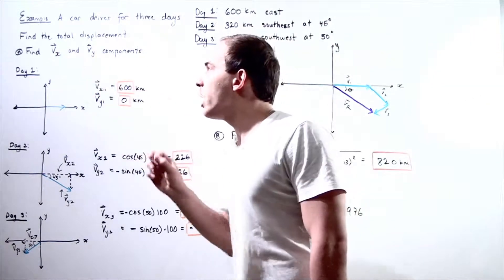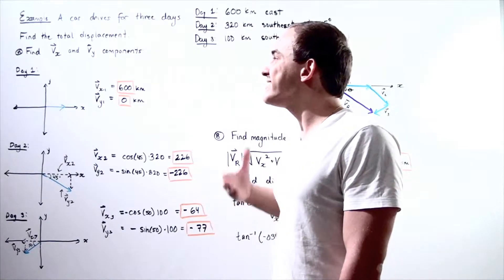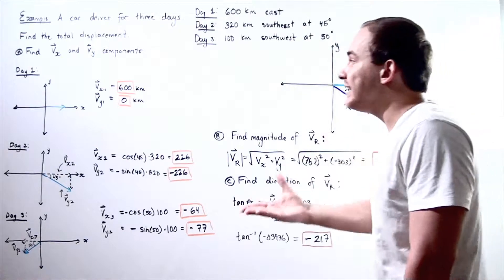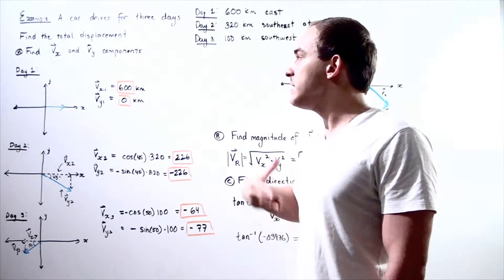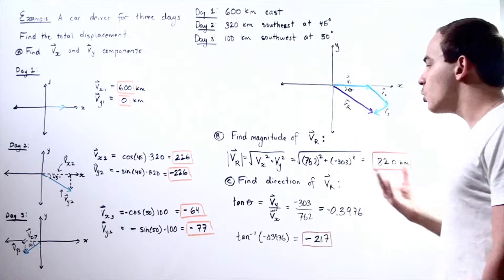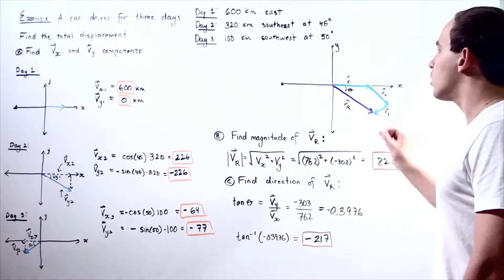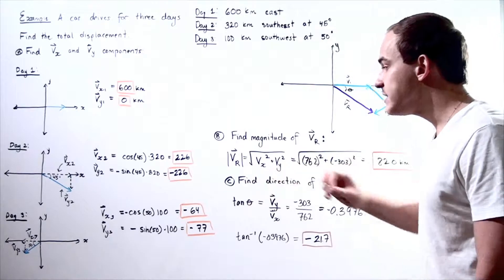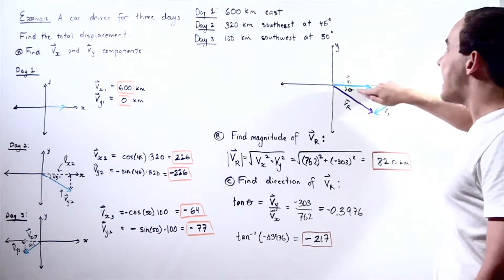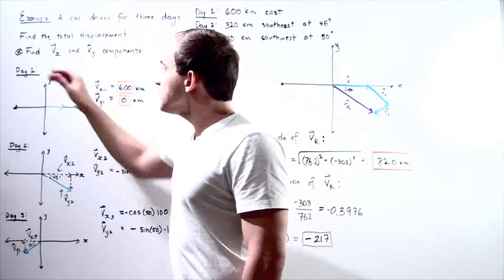In step one, we want to find Vx and Vy — looking at each individual vector and finding its x and y components, then adding them up. In part b, we'll use our formula to find the magnitude of our final resultant vector. In part c, we'll find our direction — the angle that tells us the direction of the resultant.